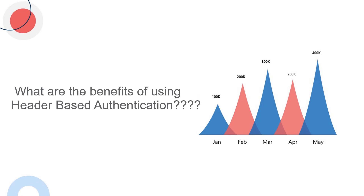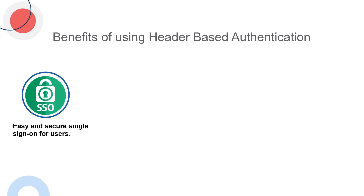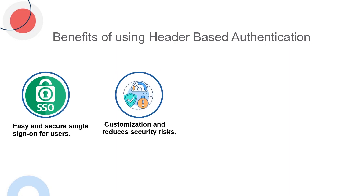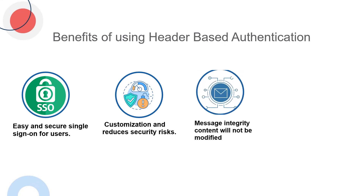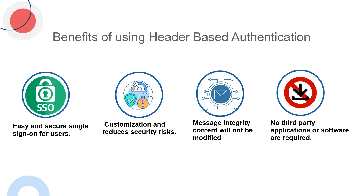What are the benefits of using header-based authentication? It provides easy and secure single sign-on for users. You can set which parameters in the header are to be used to authenticate users, which offers customizability and reduces security risks. Message integrity is maintained, as the content will not be modified during the authentication process. No third-party applications or additional software installation are required.